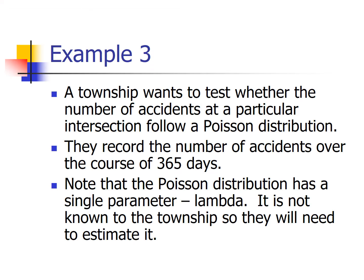This third example is a bit more challenging. I might put something like this on a homework question but probably not on a test — especially for students who haven't had STAT 505. The majority of you have had 505, so it should make sense. A township wants to test whether the number of accidents at a particular intersection follows a Poisson distribution — a discrete distribution used for count data.